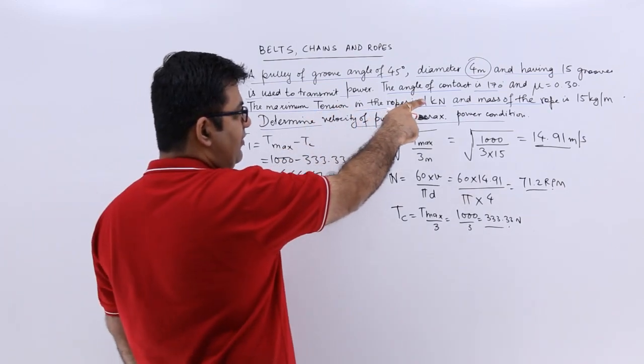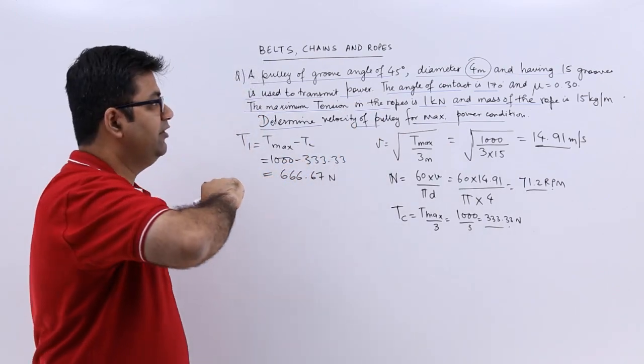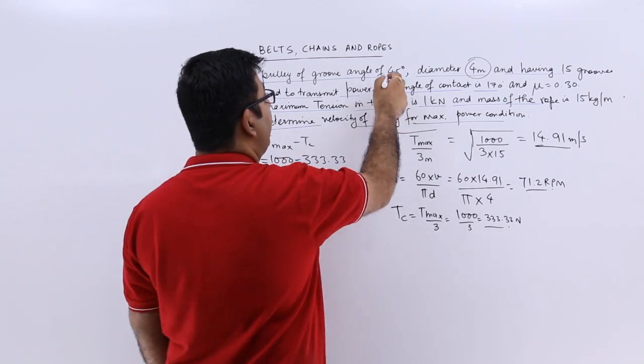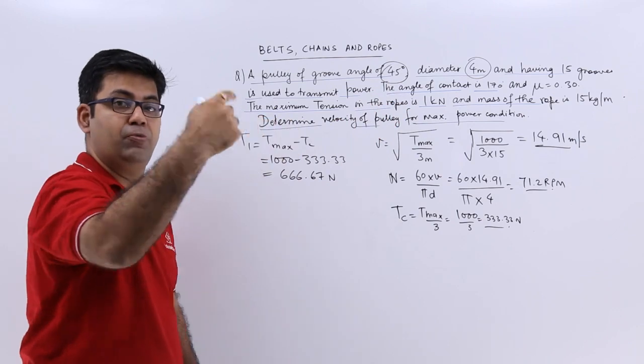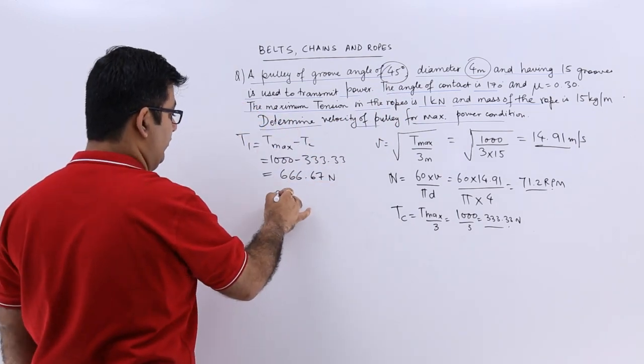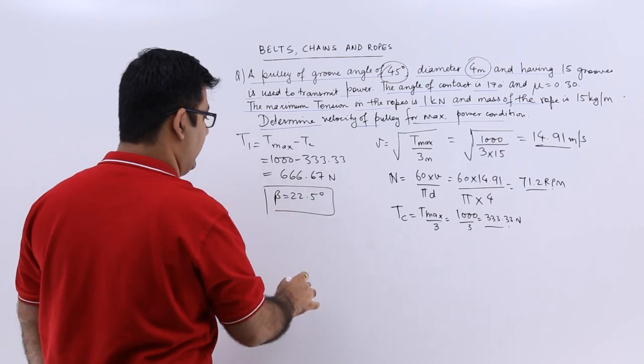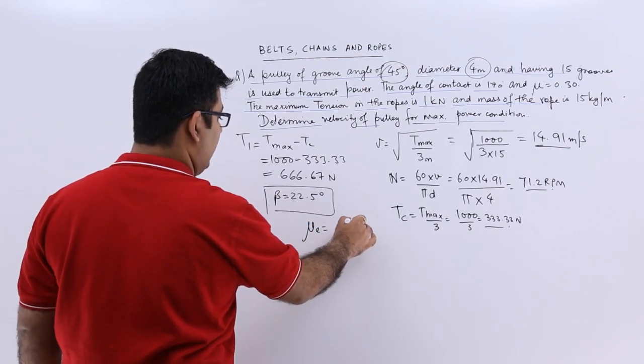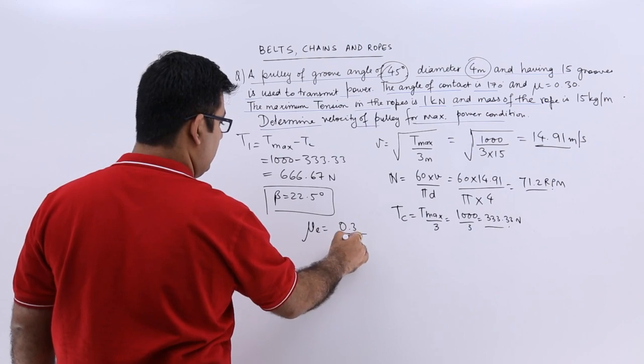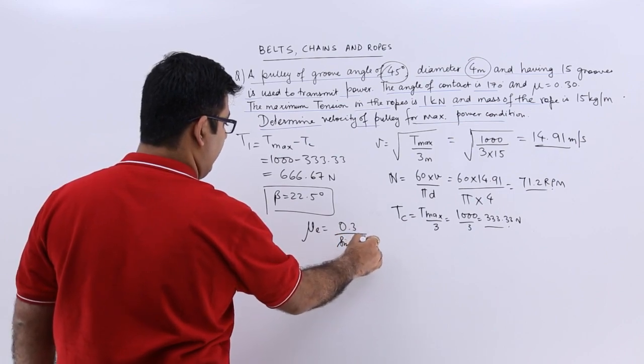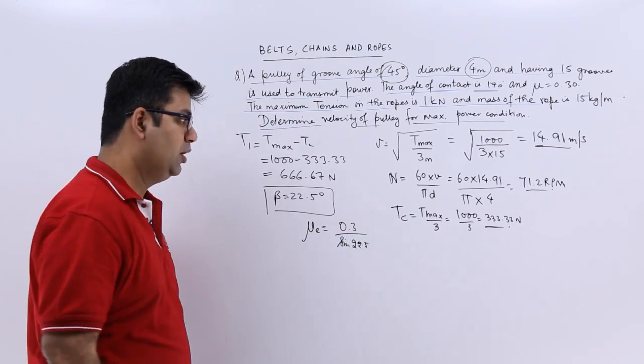Now we know theta which is 170 degrees and we know mu and we also know the groove angle, 2 beta. So beta is 22 and a half. So I can find out mu e which is 0.3 upon sine 22.5.